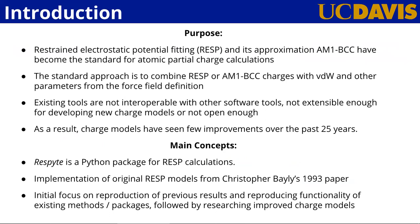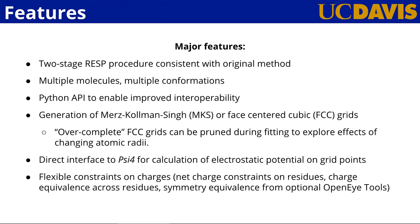RESP and AM1 BCC are considered to be the standard methods for atomic partial charge calculations, but the existing tools are not interoperable with other software tools or open enough. The main concepts of RESPite are an open-source Python implementation of the RESP method with new features to improve current charge models. Initial work focused on reproducing previous results, and the package is called RESP.